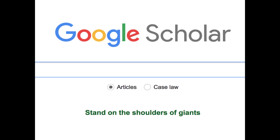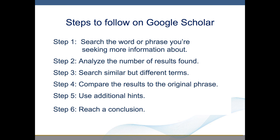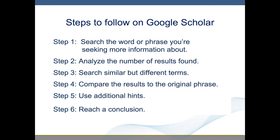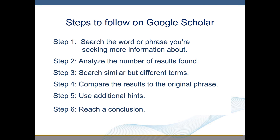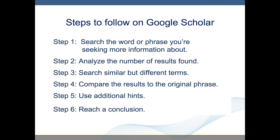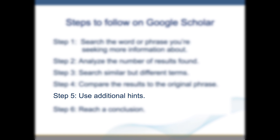To use this process, make sure you are on Google Scholar search and not on the regular Google search. The steps to follow on Google Scholar include: Step 1, search the word or phrase you're seeking more information about; Step 2, analyze the number of results found; Step 3, search similar but different terms; Step 4, compare the results to the original phrase; Step 5, use additional hints; Step 6, reach a conclusion.